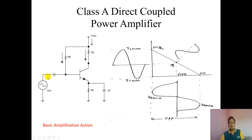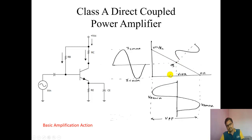This is the basic amplification. When you apply the input signal, the Q point shifts upward. As input voltage increases in one direction, the Q point shifts upward, meaning this operating line shifts towards zero.